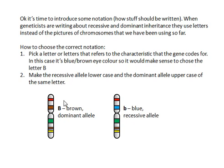We make the recessive allele lowercase and the dominant allele uppercase. So here, we know that the brown allele is dominant — it's the one that's going to rule over the blue — so we give it a capital B. Whenever you see a capital letter when we're talking about genotypes, that means it's the dominant allele. The blue allele is represented by a little lowercase b, and that represents the recessive allele. Both of them use the letter B.